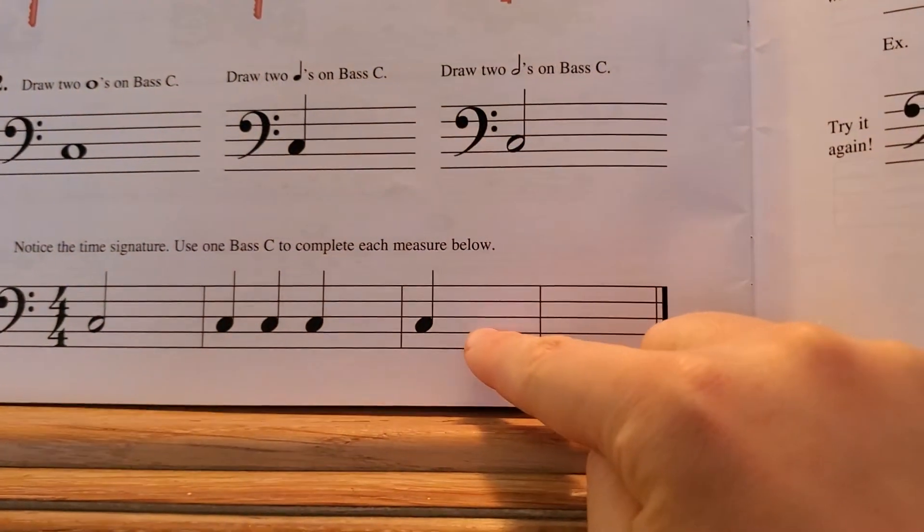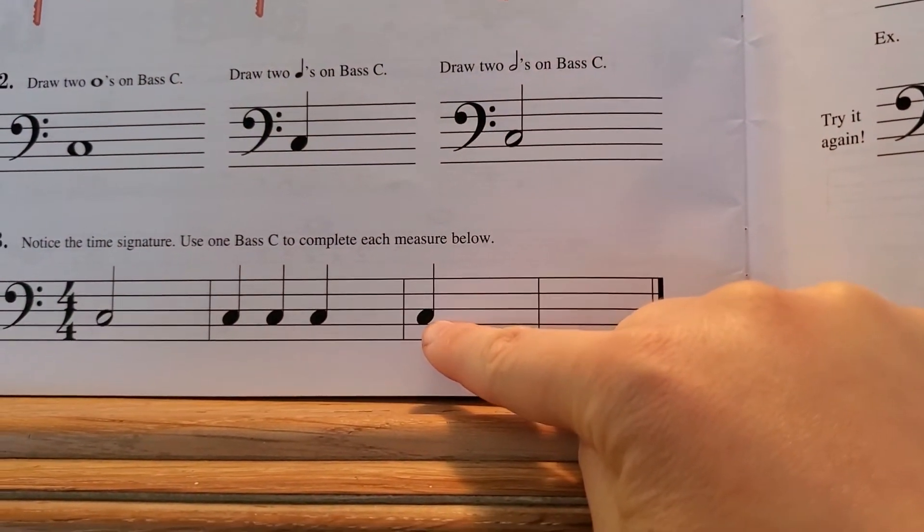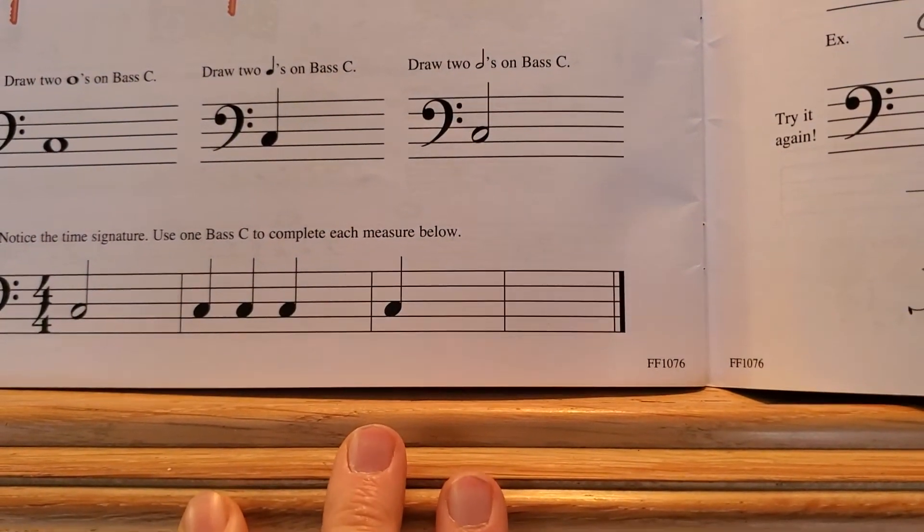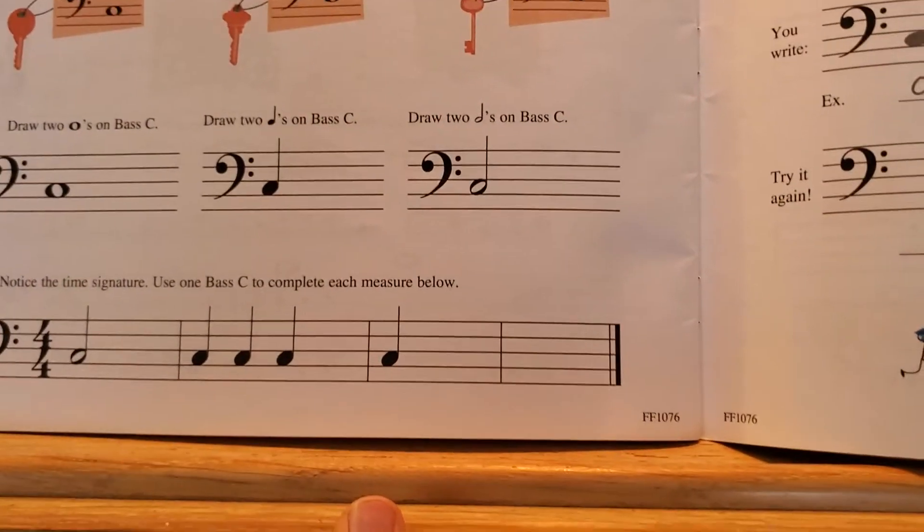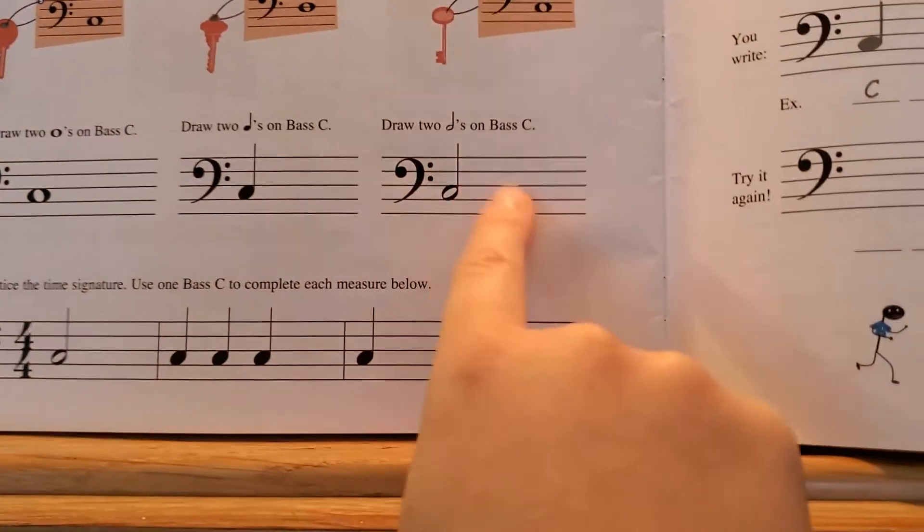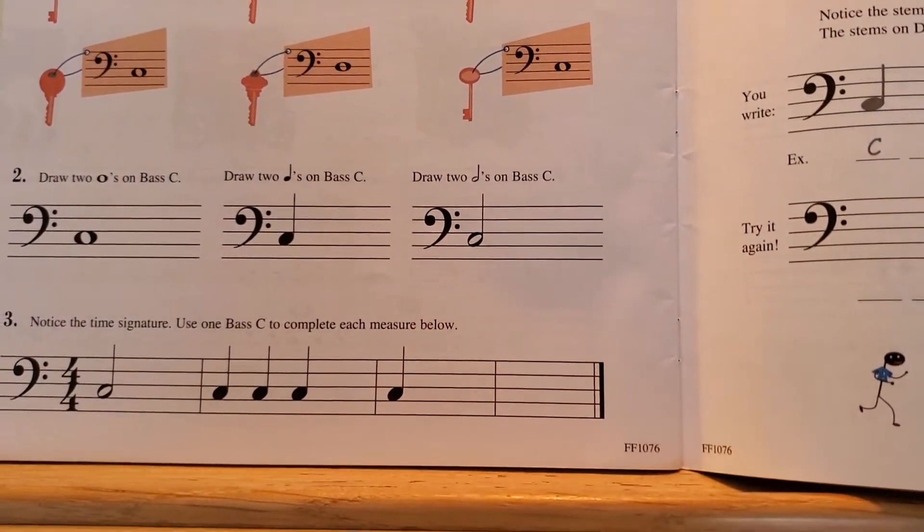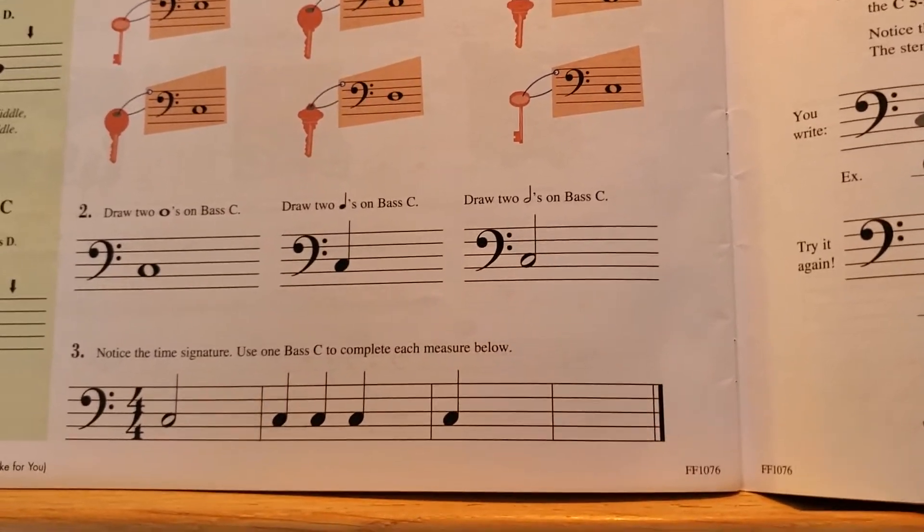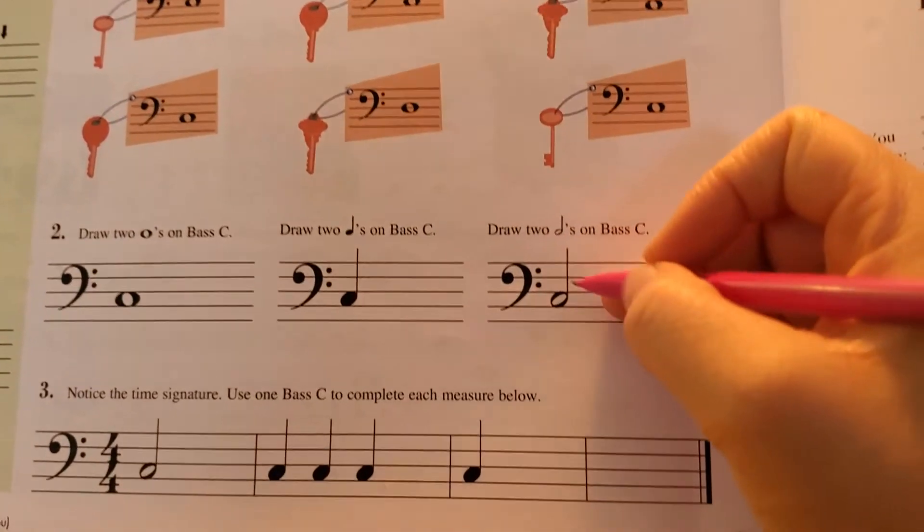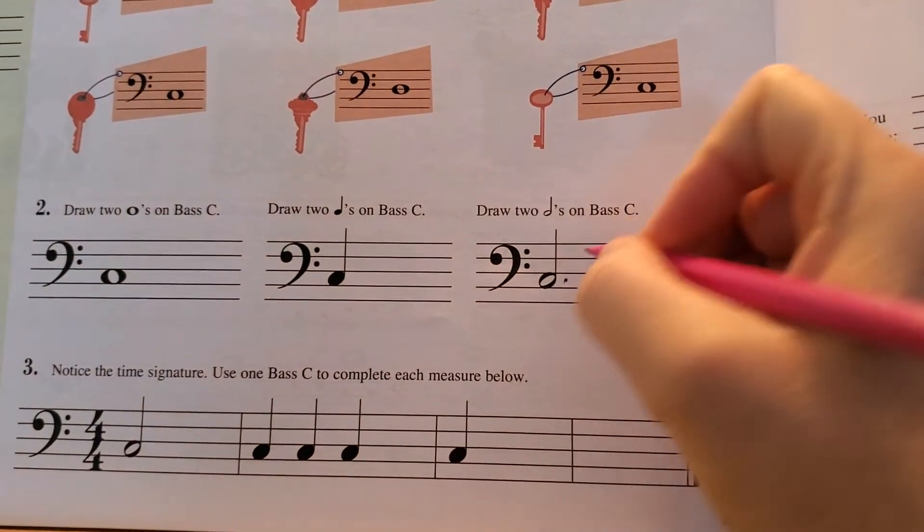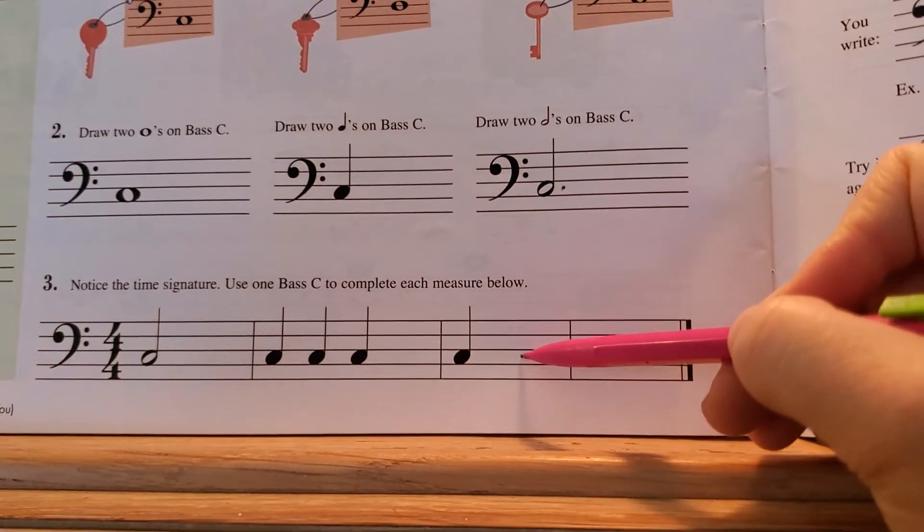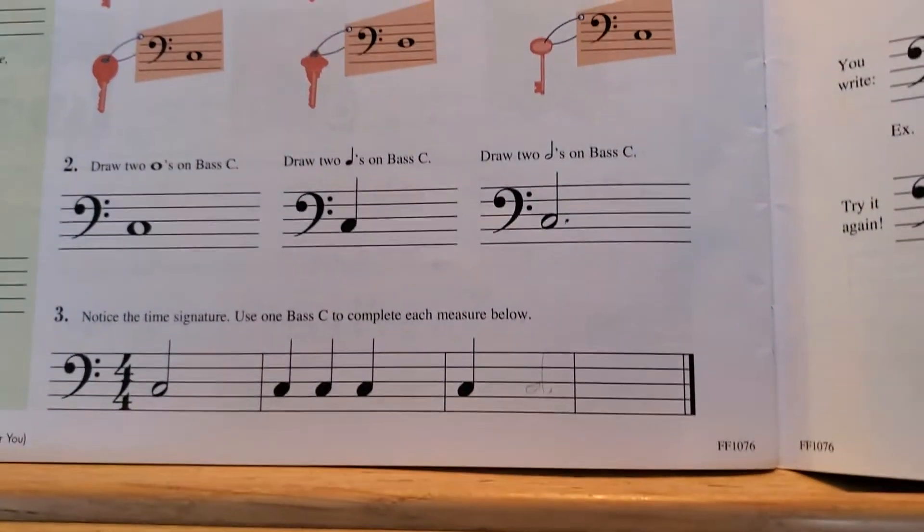And then here you have one quarter note, so you would need three more beats to fill that measure. We actually don't have one of those on here, but she's already learned it. It would look just like this one, except it's going to have a little dot behind it. It's going to look like that. So you would do that for this measure to get four beats.